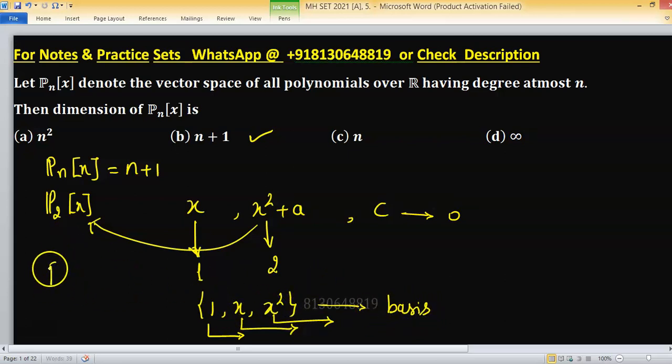That's why dimension of P_2(x) equals to 2 plus 1. Similarly, dimension of P_n(x) will be n plus 1. So this is true for polynomial case or polynomial vector space.